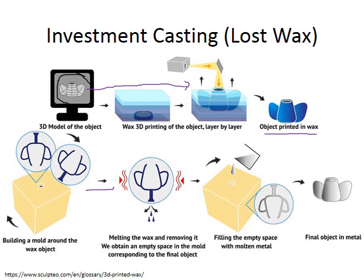The wax is then melted out — the whole thing is heated, the wax melts, it leaves the mold, and you're left with a mold of the object you want to create. Here is a cube-like mold with the internal shape of the piece to be created. The next thing that happens is molten metal is poured into the mold. The molten metal is allowed to solidify and cool, and then the ceramic mold is cracked off, and you get a final object in metal. That is how investment casting works.